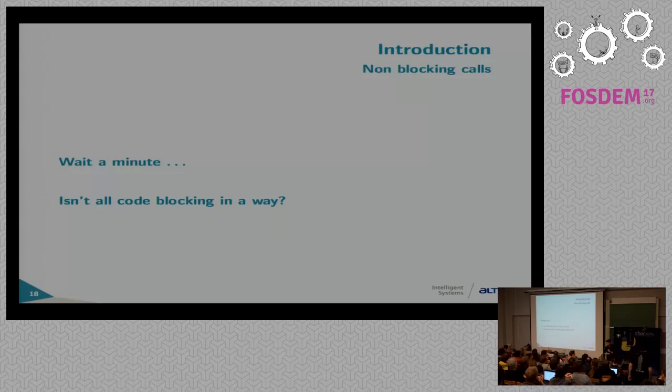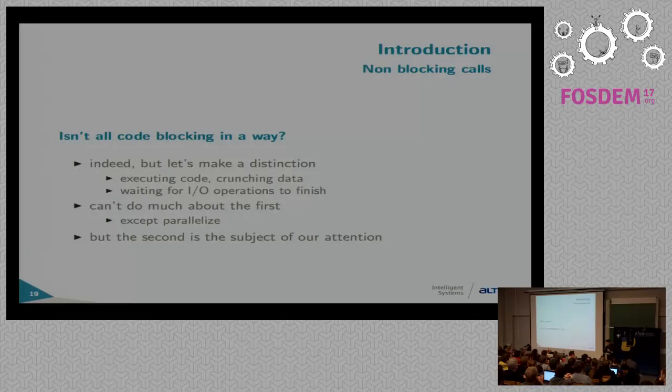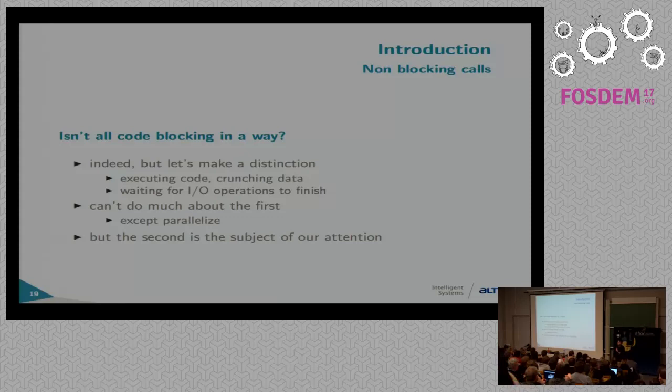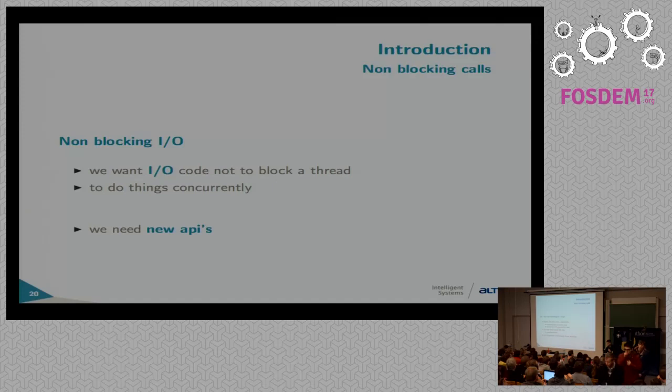You could ask: isn't all code blocking in a way? Of course it is. We have executing code, crunching data, doing calculations — and waiting for IO operations to finish. For the first case there's not much we can do except parallelization. But the second — waiting on IO — is the subject of our attention here today. Using async IO coroutines, we can actually do something about the blocking overhead of waiting on stuff.